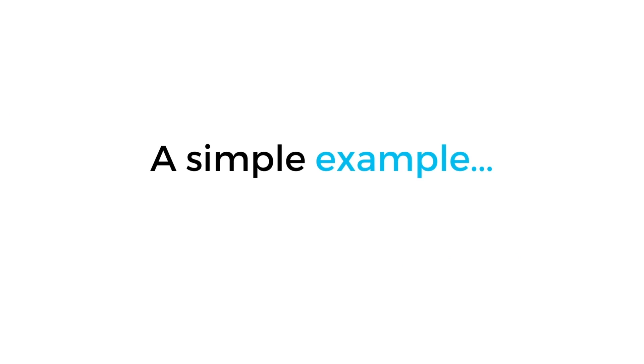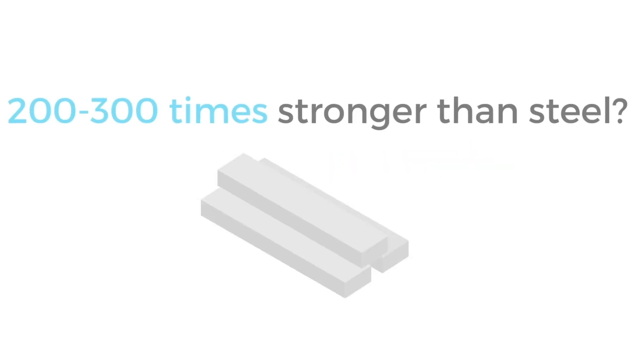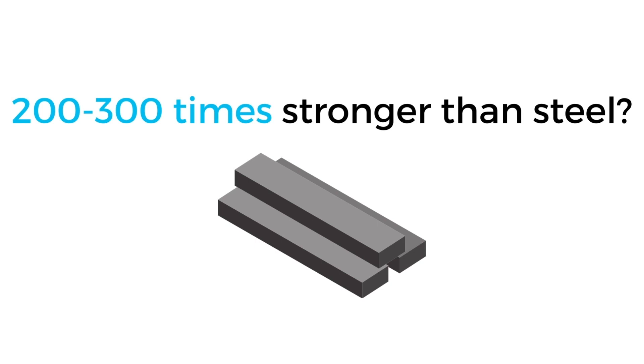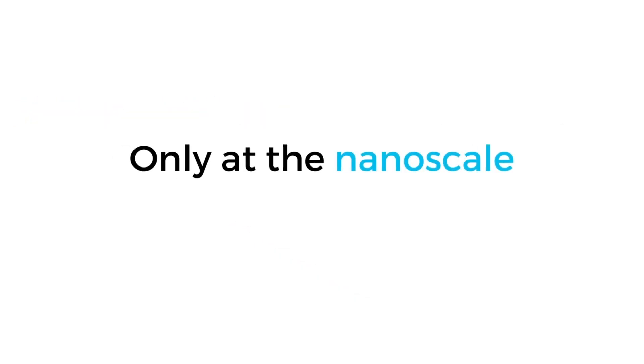To give you a simple example, people often say that graphene is 200 to 300 times stronger than steel. But this is only true at the nanoscale and does not translate beyond that scale.